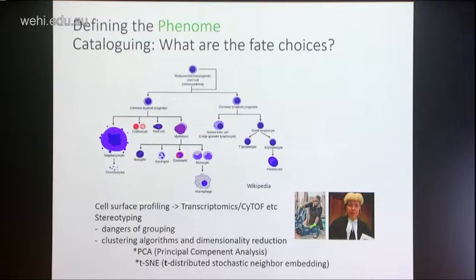That cataloguing has been done a lot with cell surface profiling, and that's of course got more and more sophisticated with things like transcriptomics and CyTOF. Whereas at the beginning you'd use morphology or maybe one or two markers, now we can be far more sophisticated about this sort of cataloguing.